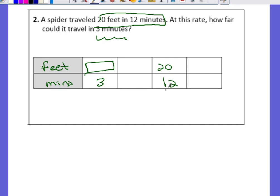Okay so here we go. You could divide by two, divide by two and keep going until you get to three minutes. Or you could use a scale factor and say, what do I do to 12 to get three? What can I multiply it by or divide it by? In this case divide it by four. Can you also divide the 20 by four? Yes you can. And when you do you get five feet. So at this rate how far could it travel in three minutes? Five feet in three minutes. That would be your answer.